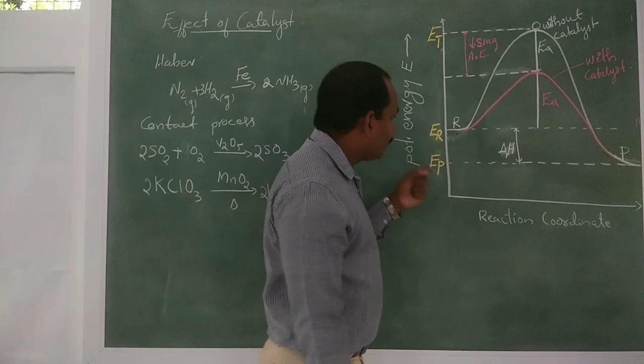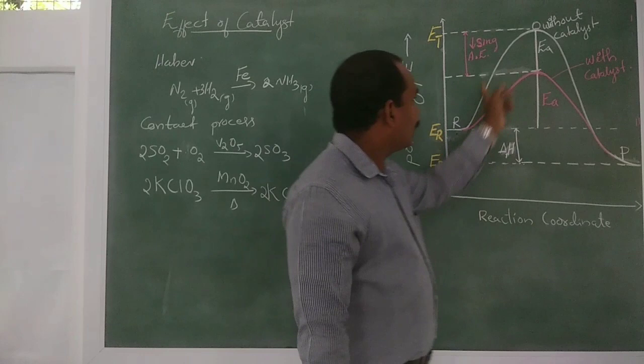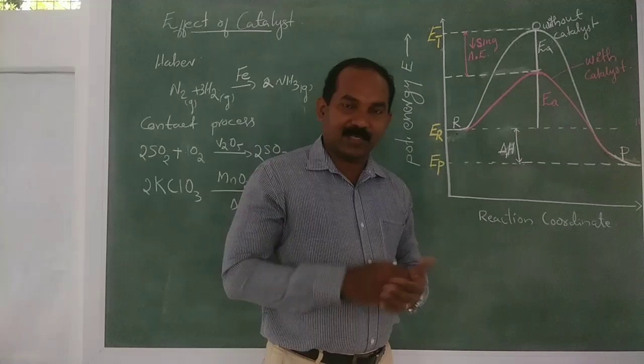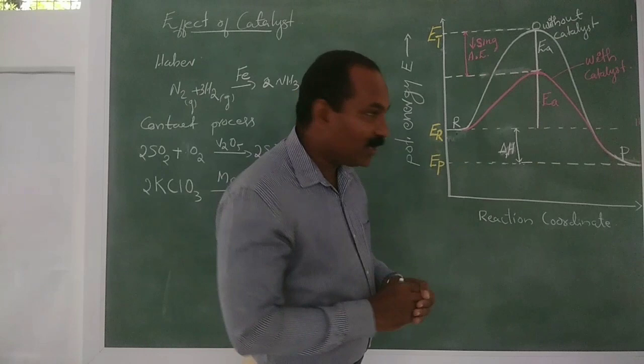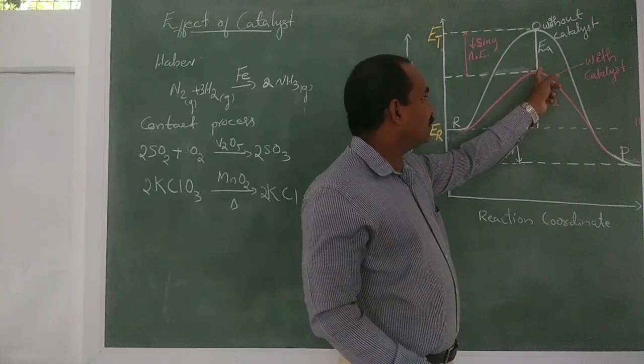This curve represents the reaction without a catalyst. When we add a catalyst, or the reaction takes place at the surface of the catalyst, the activation energy decreases. By lowering the activation energy, the reactants combine to form an activation complex more quickly, and hence the rate of the reaction increases.